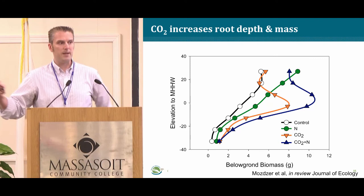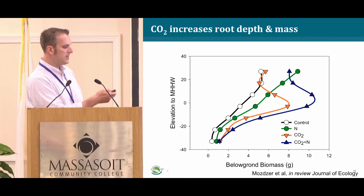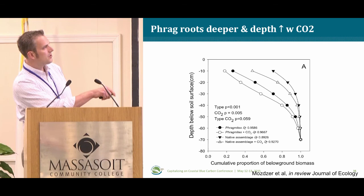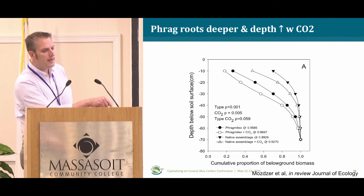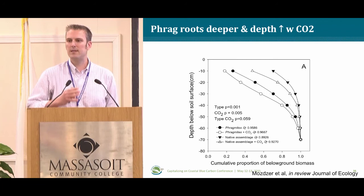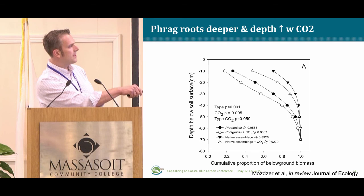Using a consistent color coding — white for control, green for nitrogen, orange for CO2, blue for CO2 plus nitrogen — we see CO2 or CO2-plus-nitrogen profoundly deepens the rooting zone. That's really important because roots placed deeper will probably stay there longer and decompose less quickly. Nitrogen increases root productivity as well. Comparing to the native plant community, CO2 consistently increases rooting depth with Phragmites, but critically, Phragmites roots significantly deeper than the native plant community overall.